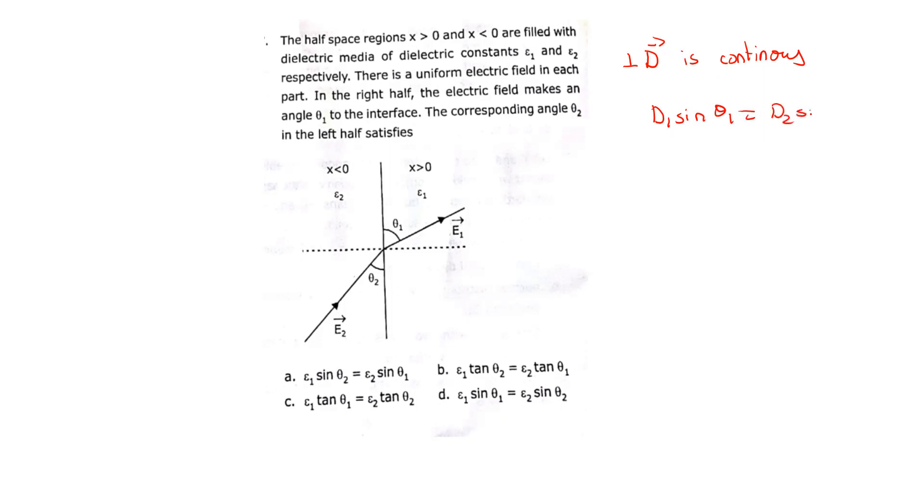The tangential components of the electric field are also continuous across the boundary. By this equation, we can write E₁ cos θ₁ equals E₂ cos θ₂.